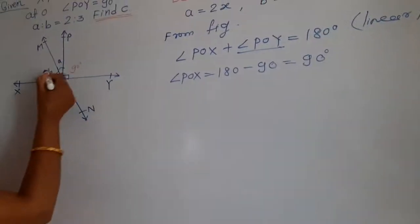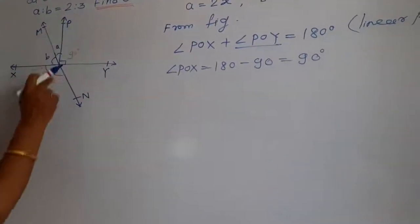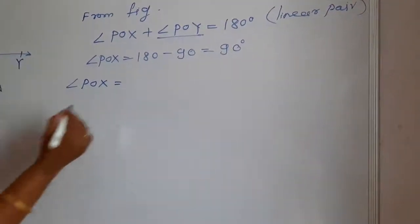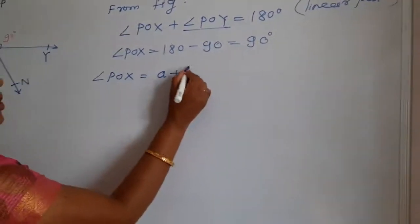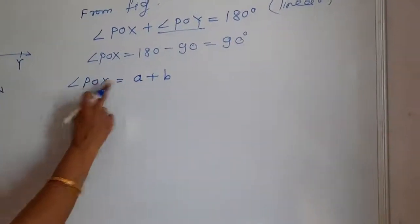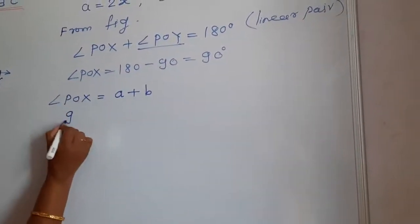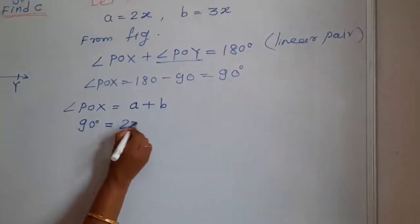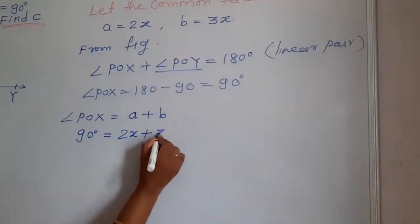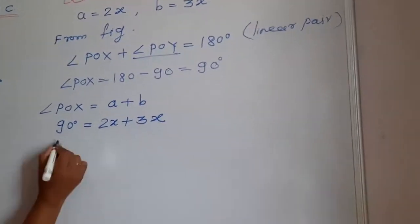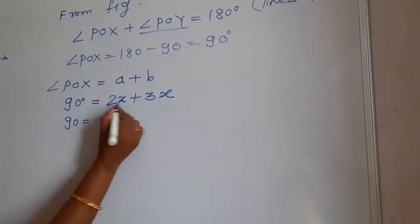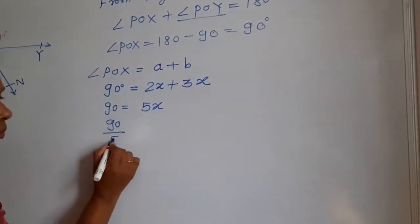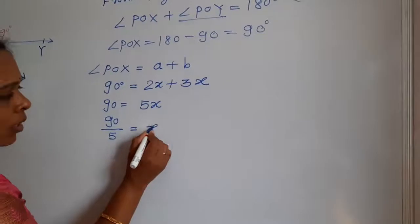Now angles A and B are the parts of angle POX, so angle POX equals A plus B. But angle POX equals 90 degrees, and A equals 2X and B equals 3X as per the supposition. So 90 equals 2X plus 3X, which is 5X. Therefore 90 upon 5 equals X.